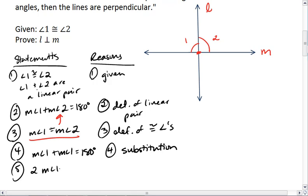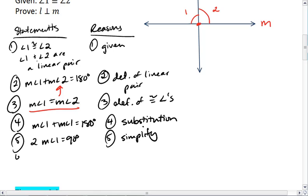Then, 2 times the measure of angle 1 equals 90 degrees, because we simplified. So the measure of angle 1 equals 90 degrees by division.